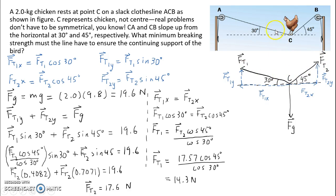In this part of the clothesline, the tension would need to be 14.3 newtons. That's the minimum breaking strength for the clothesline to not break. And for this portion, it needs to be able to withstand a minimum of 17.6 newtons for the clothesline to not break. Thank you for watching.